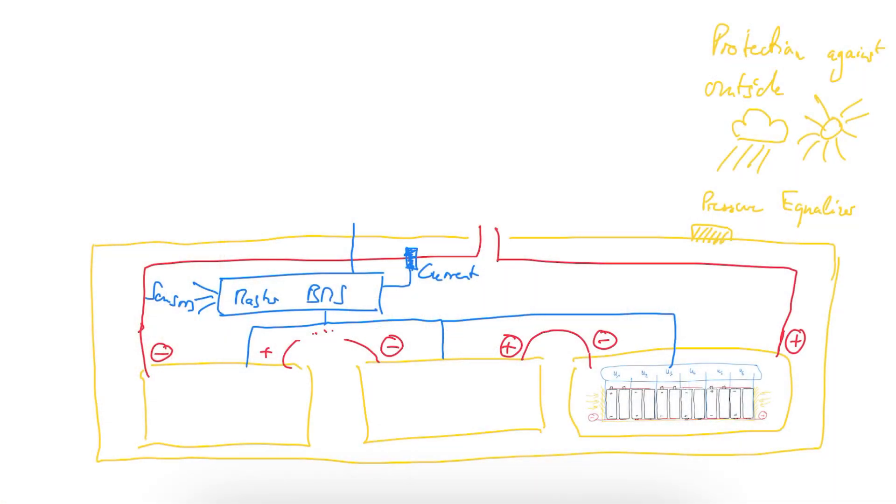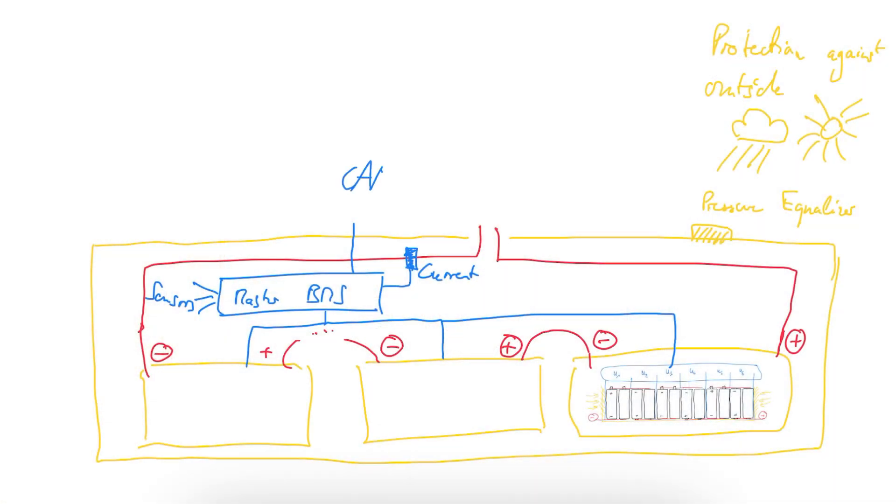Some things like isolation resistance measurement. All these things to make sure the battery is in a safe state. Also what I forgot last time to mention is there are of course temperature sensors as well in the module connected to the slave BMS and this is then connected to the master BMS.